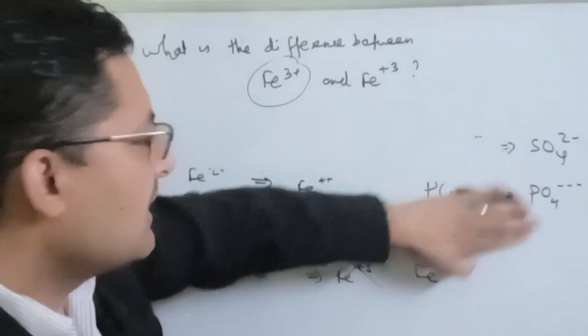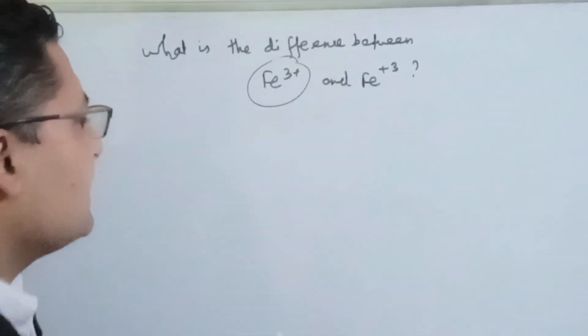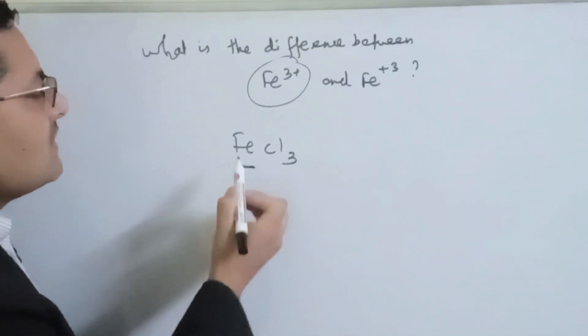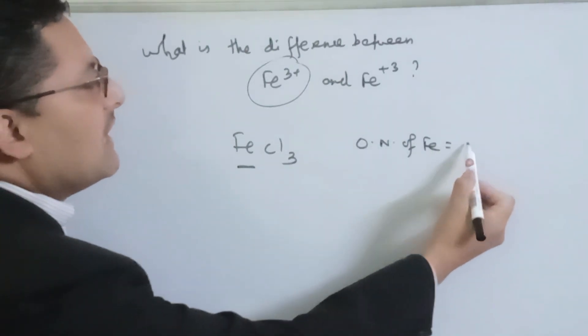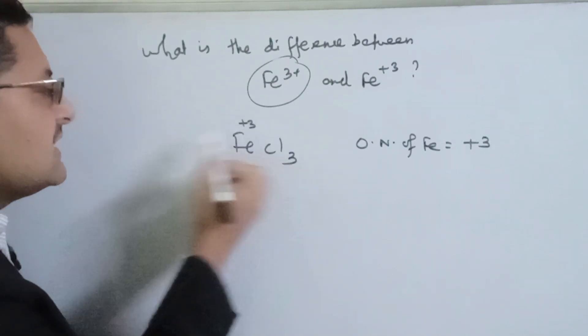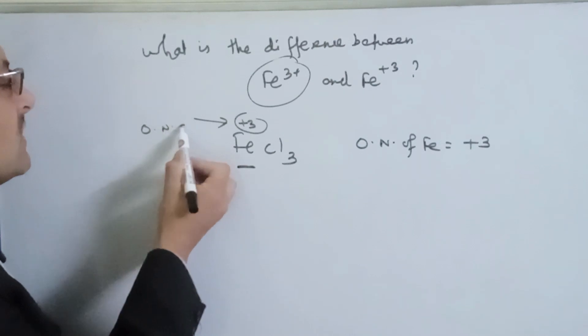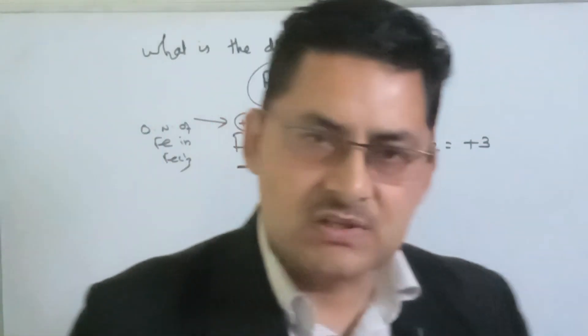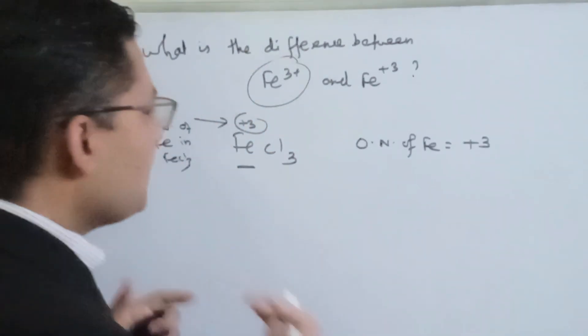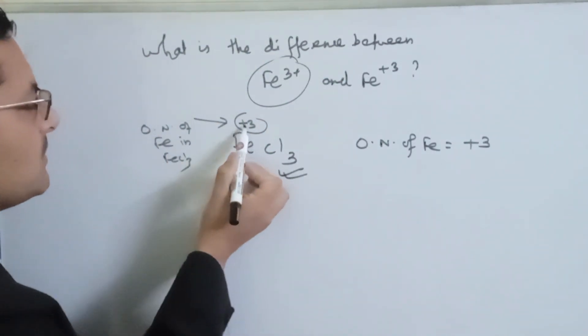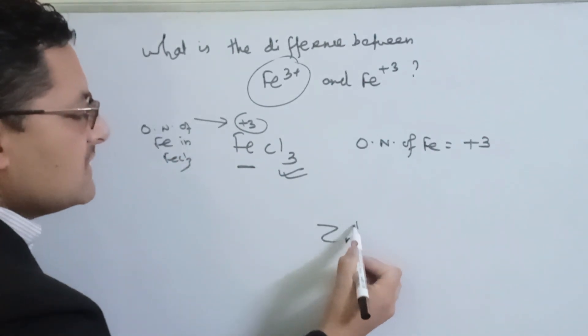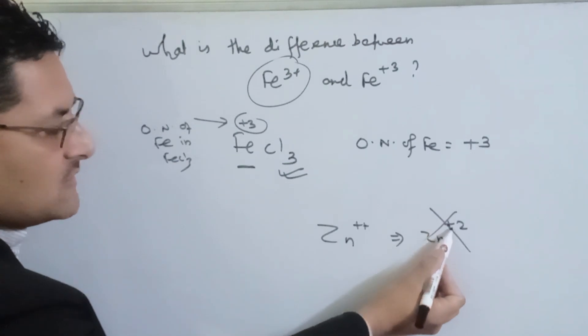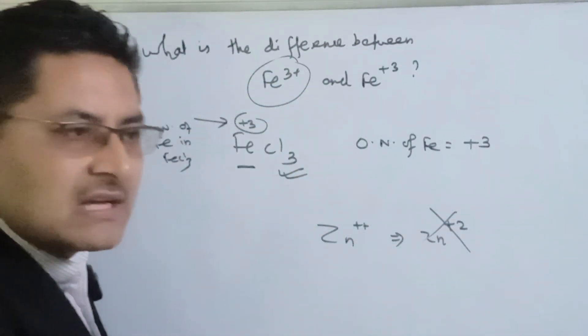Suppose ferric chloride is a compound. In ferric chloride FeCl₃, the oxidation number of iron is plus 3. In FeCl₃, we can say that the oxidation number is plus 3.